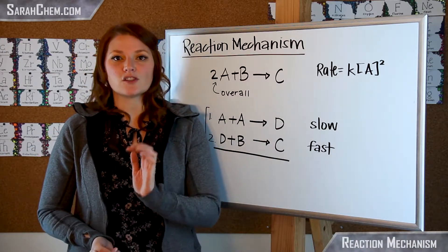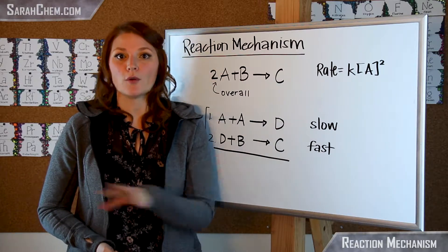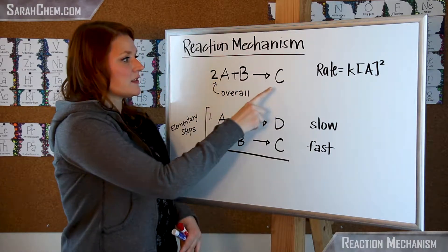A reaction mechanism essentially tells you the step-by-step procedure that has to take place in order for an overall reaction to happen. So over here, if I take a look at this, it says 2A plus B goes to C.